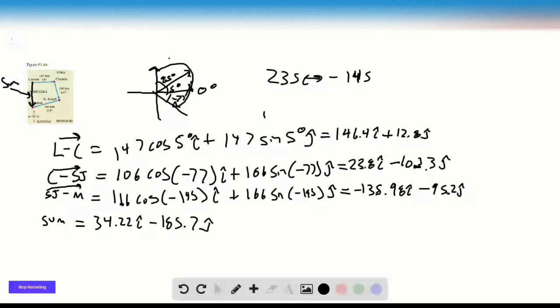And the magnitude of the sum, so that's the length, how long the sum is, this vector sum. It's just the square root of the squares of these two components, which equals 188.83. So this is the square root of the squares of 34.22 plus the square of 185.7, just from Pythagorean theorem.